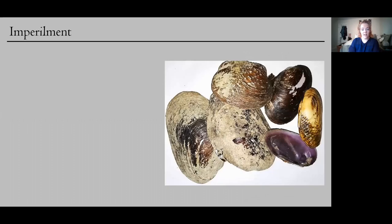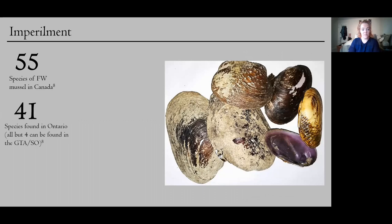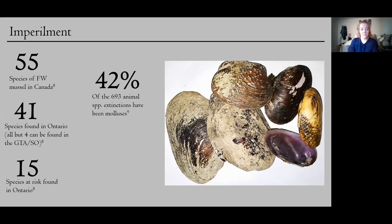And the story isn't a lot better for freshwater mussels. We actually have 55 species of freshwater mussels in Canada, which is one of the highest species diversities in the world. And 41 of these species can be found in Ontario with all but four that can be found in the GTA. And we have 15 species at risk of freshwater mussels in Ontario. But unfortunately, of all of the animal extinctions we've had on earth, 42% of those species were molluscs. So that's a disproportionate risk of extinction compared to all other organisms. And 99% of those molluscan extinctions were non-marine. So our freshwater mussels and gastropods are really in trouble. But people don't really know about it.